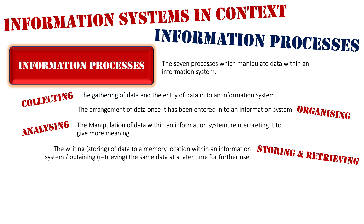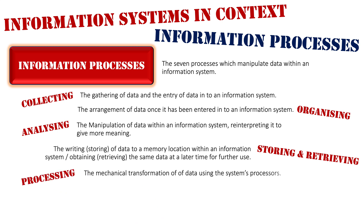The next information process is one that underpins all the others — processing itself. This is the mechanical transformation of data using the system's processes, where data is changed using the CPU, the central processing unit, which is the brain of any system. Every operation goes through the CPU, so processing is really a foundational information process.